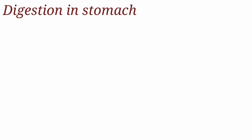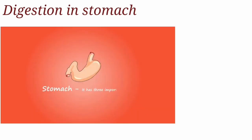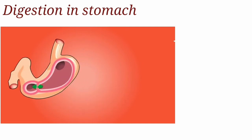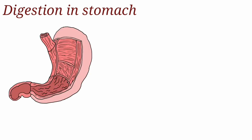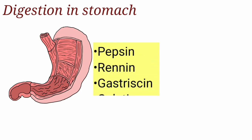Digestion in the stomach. When the food bolus enters the stomach, it stimulates the secretion of the hormone gastrin from the gastric mucosal cells. Gastrin stimulates the release of gastric juice containing hydrochloric acid and proteolytic enzymes — that is pepsin, renin, gastricin, and gelatinase.